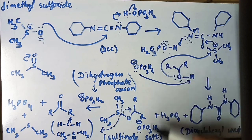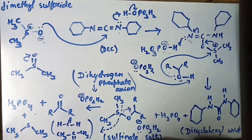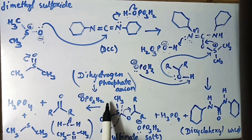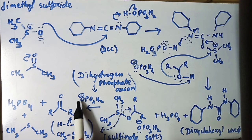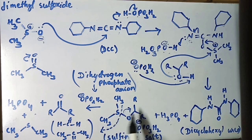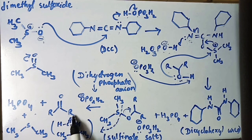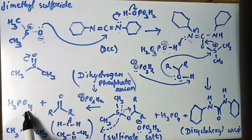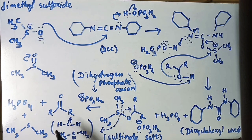The salt formed is dihydrogen phosphate anion, and this salt is called a sulfonate salt. Now the role of the dihydrogen phosphate anion is that the negative charge will attack and remove a proton. When it is removed, the bond will become a double bond. If it is H then it will become formaldehyde; if it is RCH3 then it will become acetone. H3PO4 is released along with dimethyl sulfide, so ketone or aldehyde is easily formed from primary and secondary alcohols.